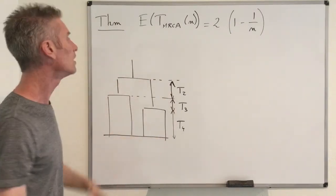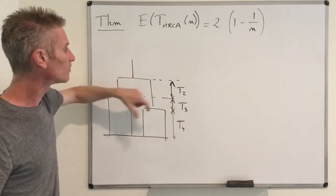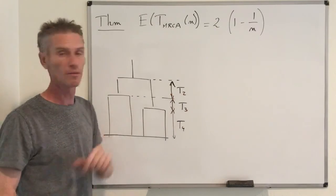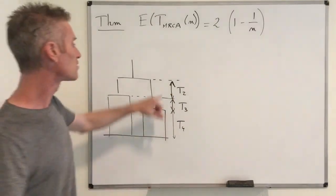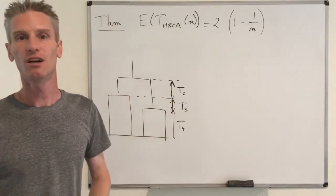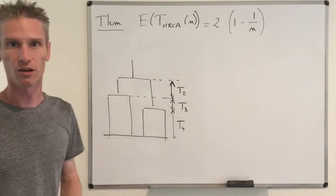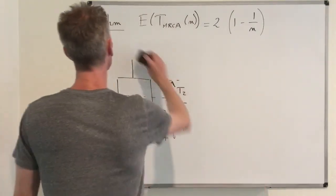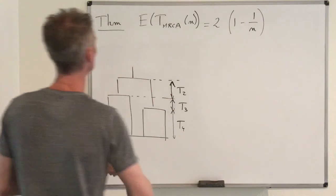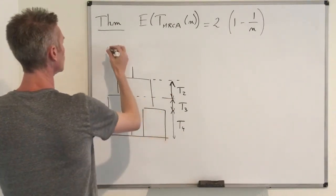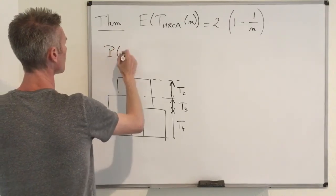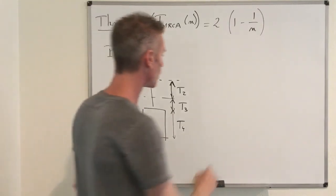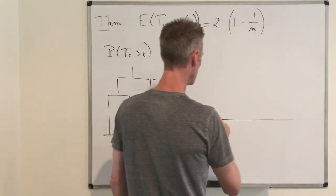Most of the work is understanding T_2. Once we understand T_2, we can easily deduce the distribution of the other inter-arrival times between consecutive coalescing events. So I'll start by computing P(T_2 > t).